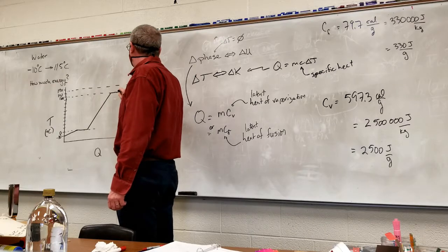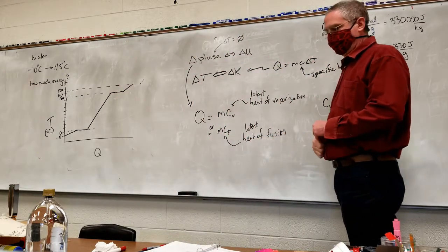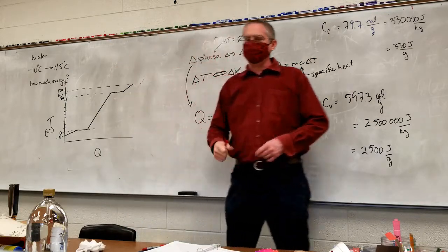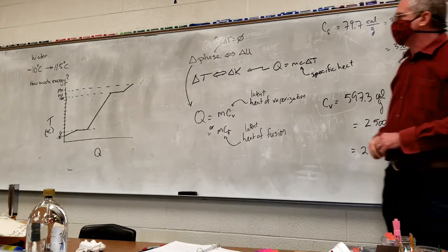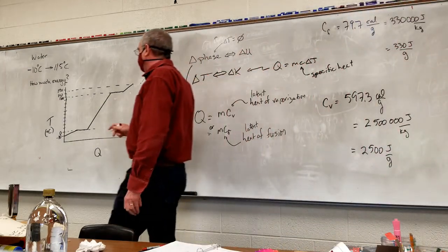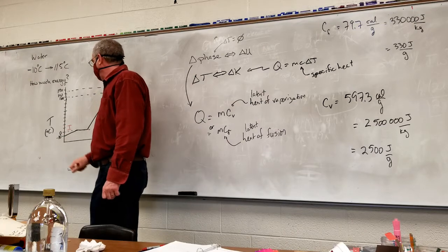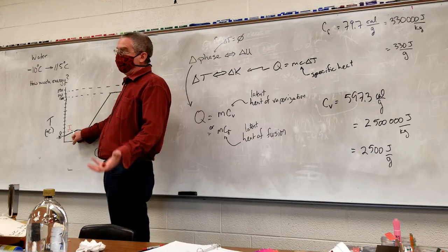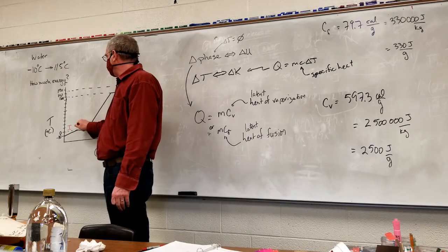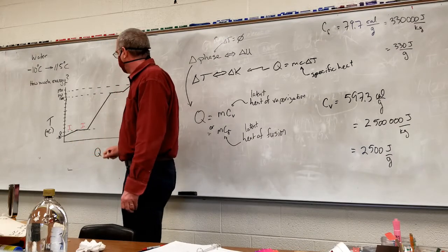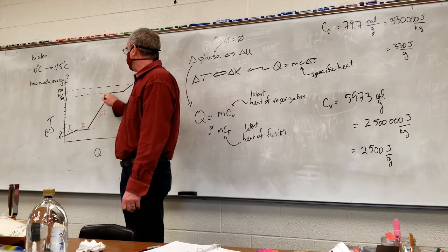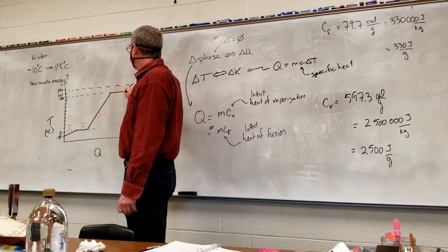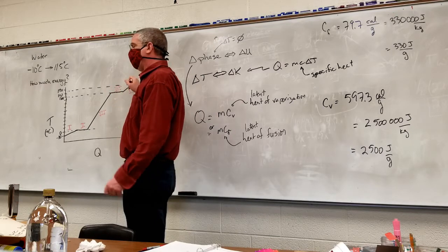And then I'm going to put energy into it which is going to cause a change in phase, so my temperature doesn't change. So once I've melted the whole thing, then the energy goes into it in order to change the temperature. And what's the next temperature in which I'm going to change phase? 100. And then at that point I'm going to boil it. And then the problem ends at 115.